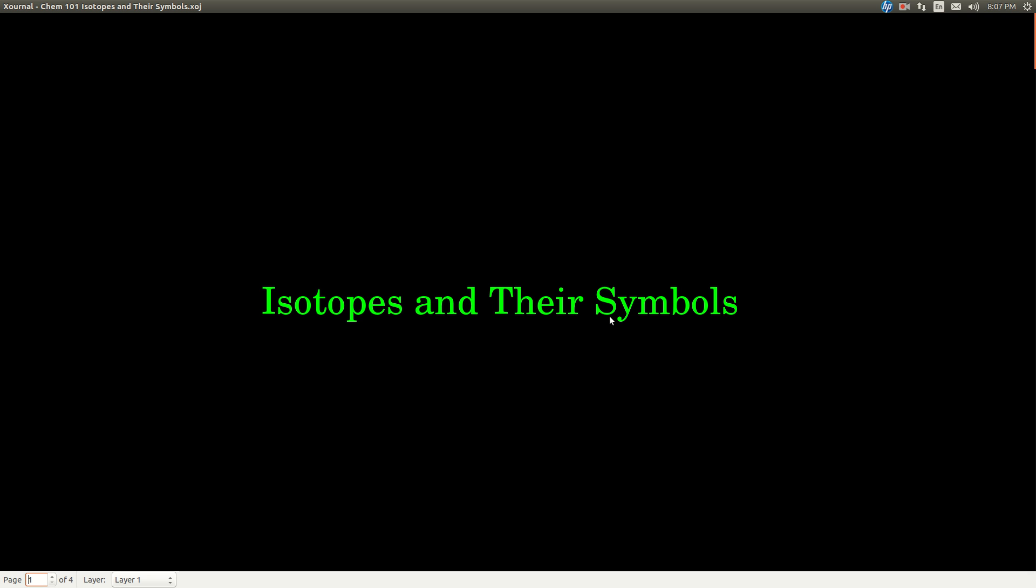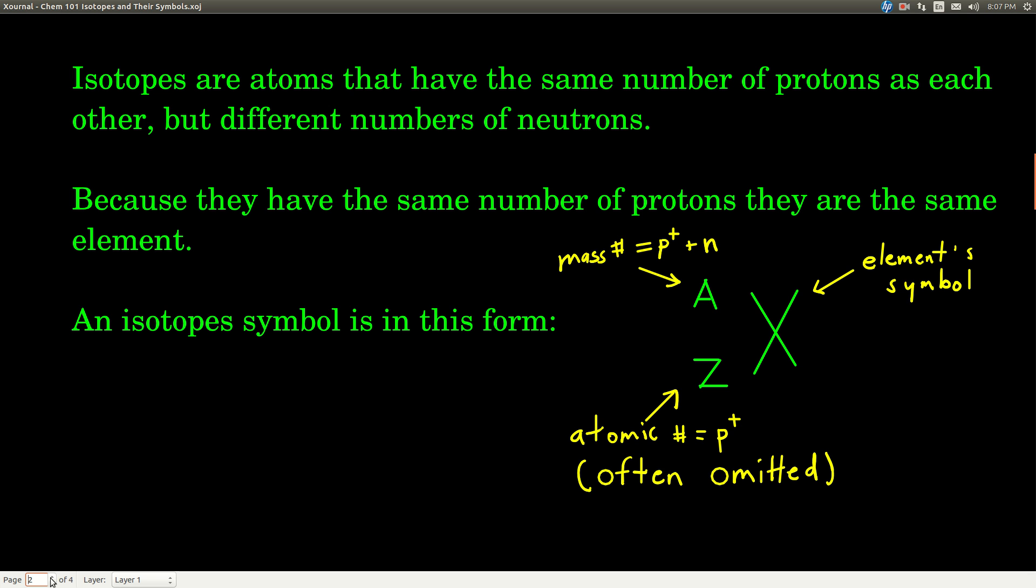This video talks about isotopes and their symbols. An atom consists of a nucleus and electrons, and in the nucleus there are protons and neutrons.